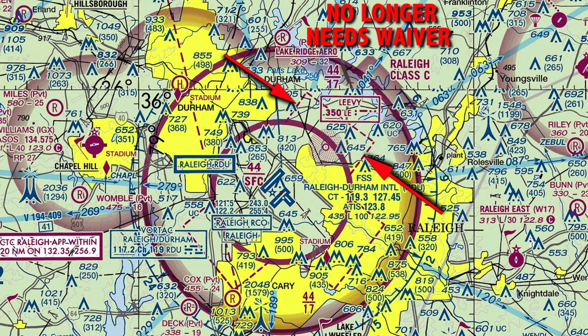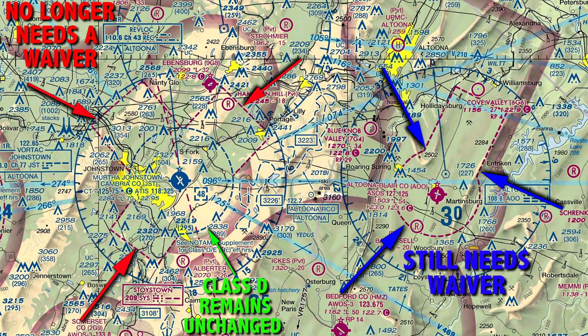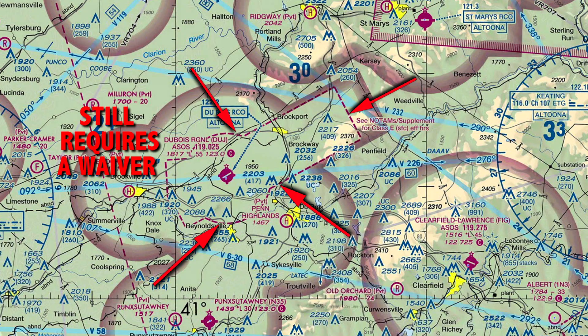I think these examples illustrate it pretty clearly. Basically, in certain aspects where the airport extensions are, you're no longer needing to apply for a waiver for those. And again, if it's all enclosed in one big area with no internal circle, no matter where in that airspace it is, you still have to apply for it.